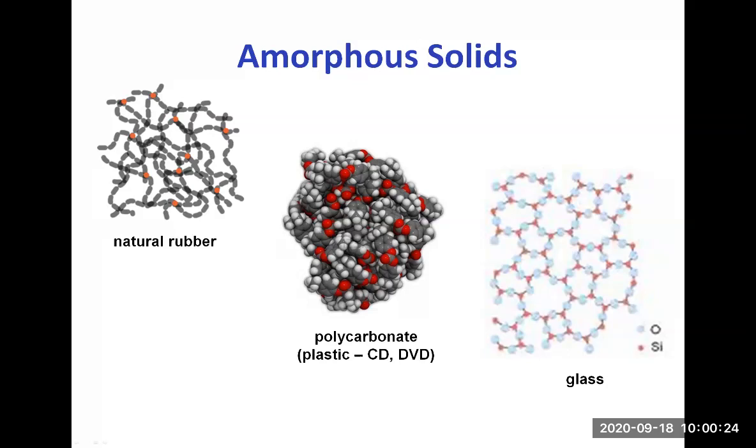All polymers are amorphous solids. Polymers are made of monomers bonded together into very long chains. And here the model represents polycarbonate, which is the plastic found in CDs and DVDs. And that's just a piece of it, right? So you can see a big blob of atoms tightly bonded together, but there is no order.